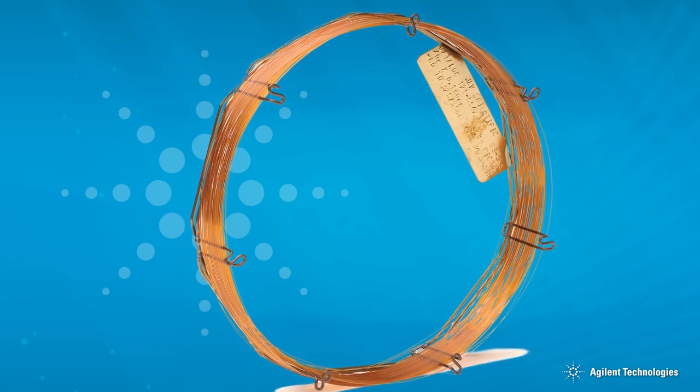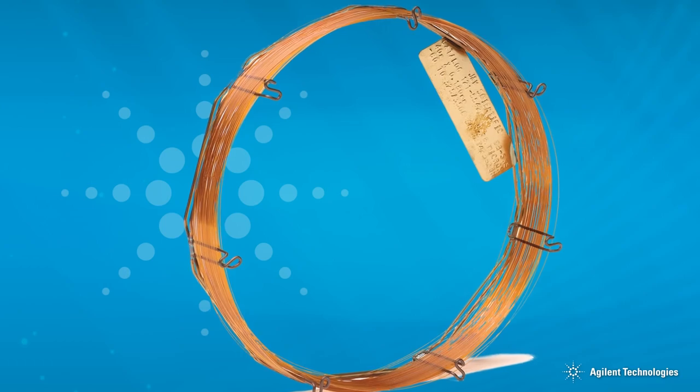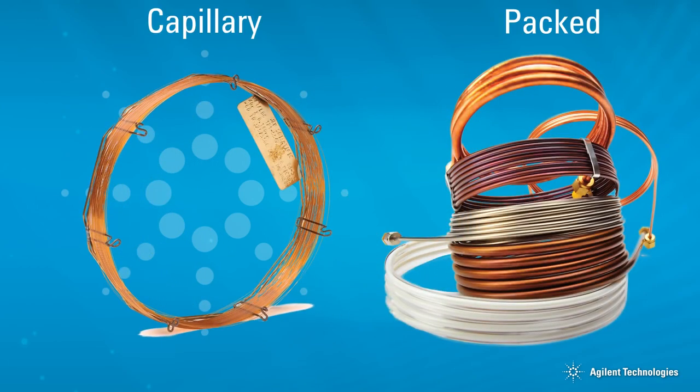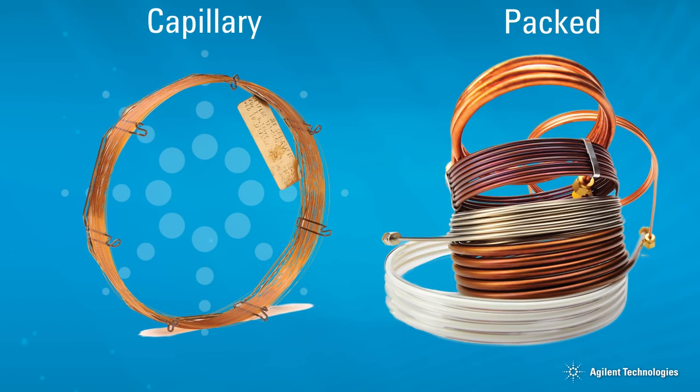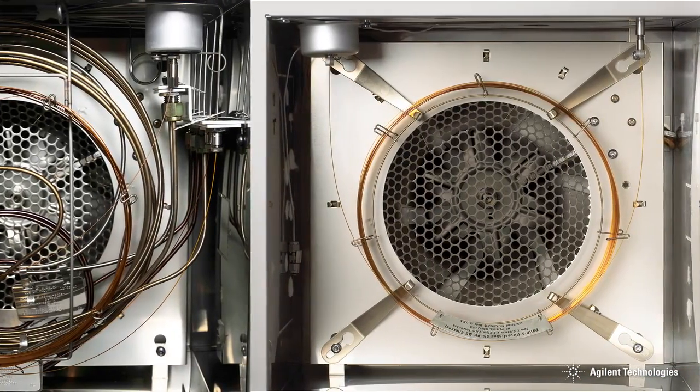The column is the heart of the gas chromatograph, where the sample components are separated. Shown here are examples of capillary and packed columns installed in various GC ovens.